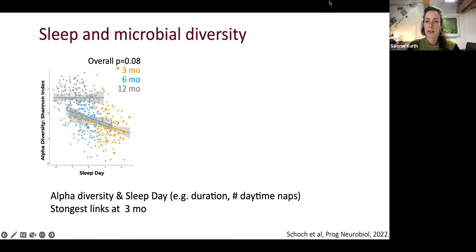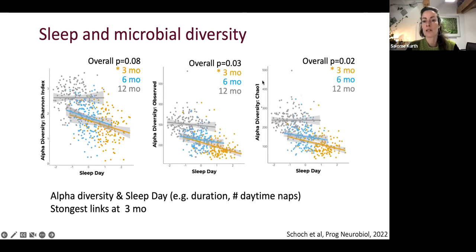This was a data-driven approach by Sarah Schoch, who was able to group these variables into larger topics. We call them sleep composites to really have a data-driven way and not a purely selective way of which variable to work with for the future analysis. Our results show that sleep and gut microbiome were indeed related in this sample. The expression of daytime sleep, so the more and the longer they would nap, the lower the diversity in the gut microbiome would be. This is expected because less napping means being more mature and higher alpha diversity also means being more mature. This relationship was strong at the age of three months, so that seems to be a particularly sensitive period for the linkage between sleep and gut microbiome maturation.